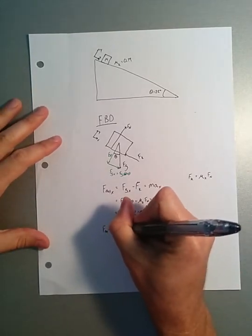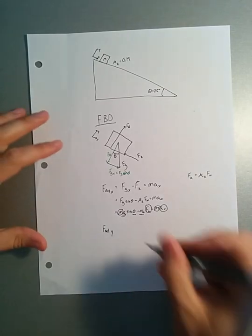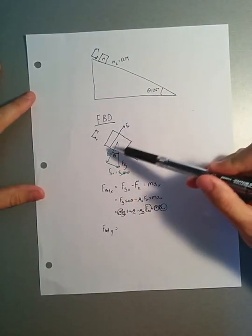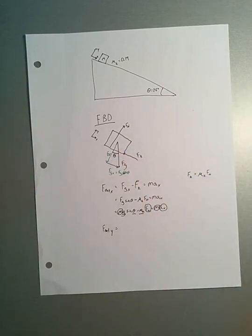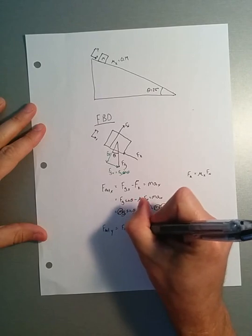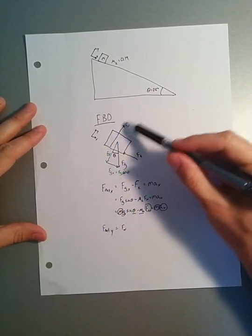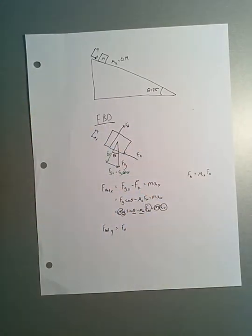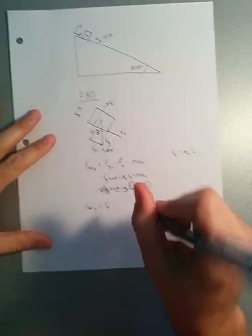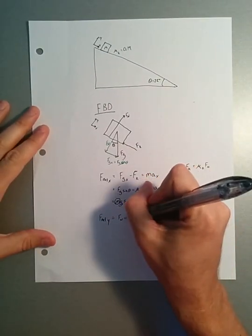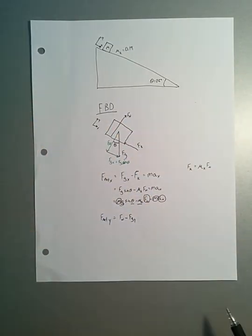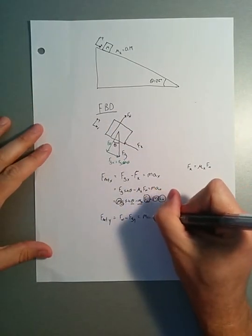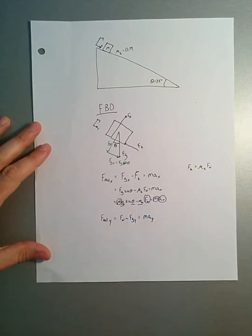So f net y now. Let's look at all the forces in the y direction. We have the normal force and the y component of gravity. And that's it. Again, no other forces in this. So fn, again, that's in the positive y direction. It's pointing up, which is what we call our positive y. And then we do minus fgy, since that's going down. Okay. And then that, again, is equal to mass times the acceleration in the y direction.